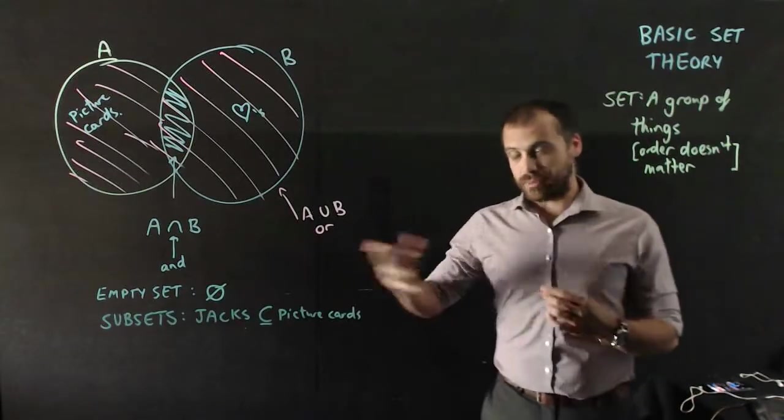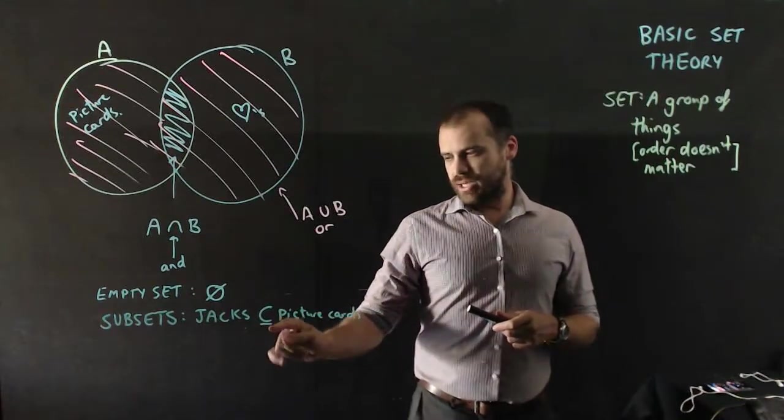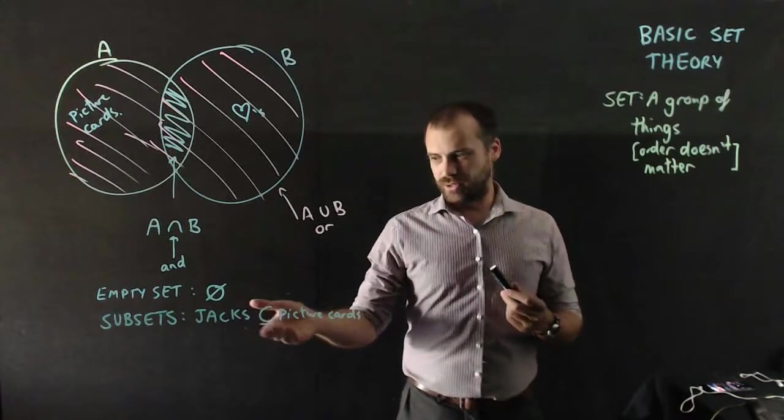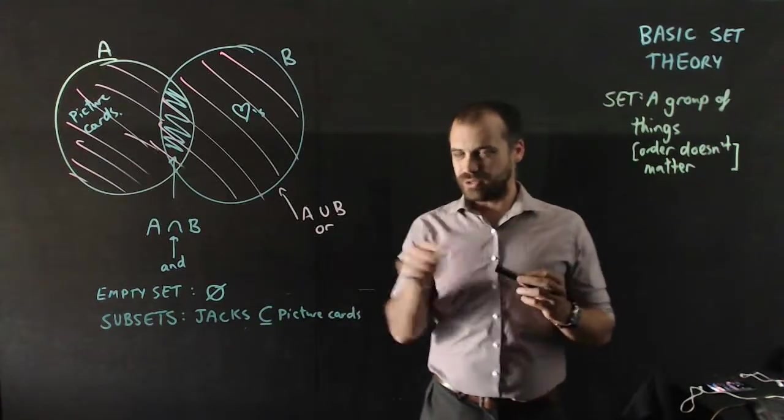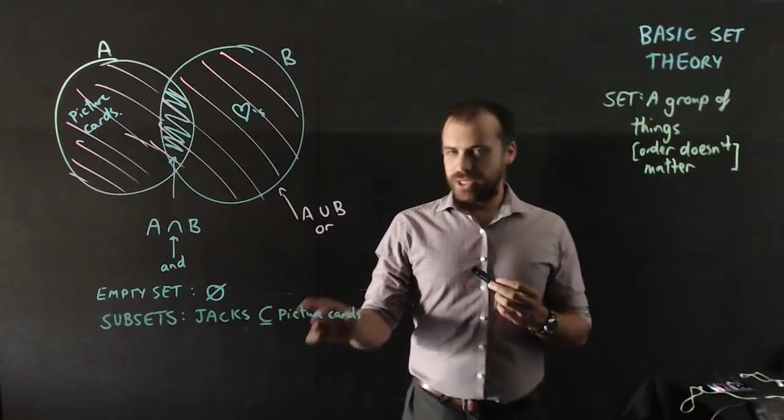The other thing I need to talk about are subsets. For instance, Jacks are a subset. It looks like a U on its side with a line, or a C with a line underneath, but it's not really a C. It's more like a flat U.